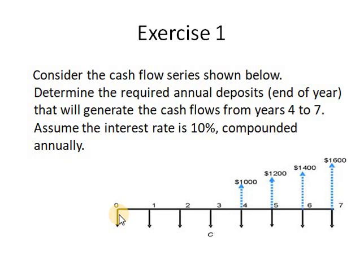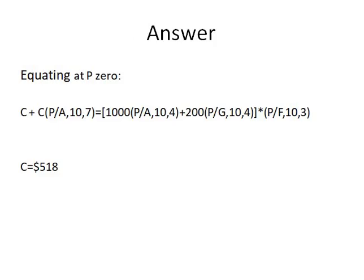To calculate its present value, we say P equals F into P/F at i=10% and n=3, because it is 3 periods away. By equating both sides in this way, you will get the value of C, which is $518.